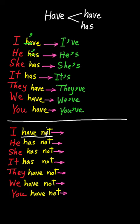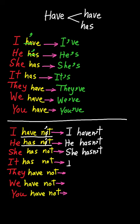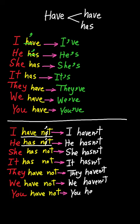We just remove the 'o' and put an apostrophe: 'haven't'. So 'I haven't'. And 'has not' is the same — remove the 'o' and put an apostrophe: he hasn't, she hasn't, it hasn't, they haven't, we haven't, you haven't. That's all about the verb 'to have' — full forms and short forms. I hope you enjoyed the video, thank you for watching!